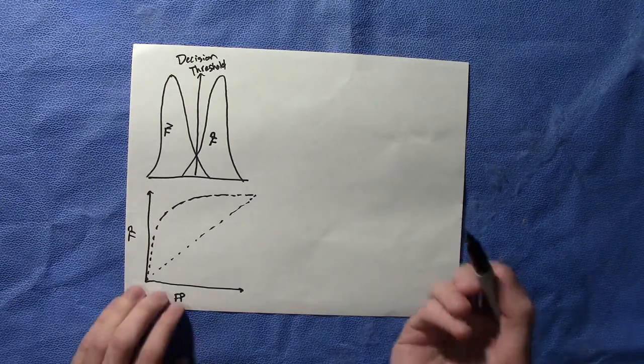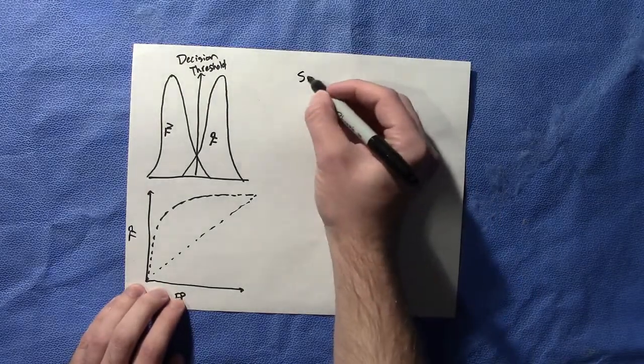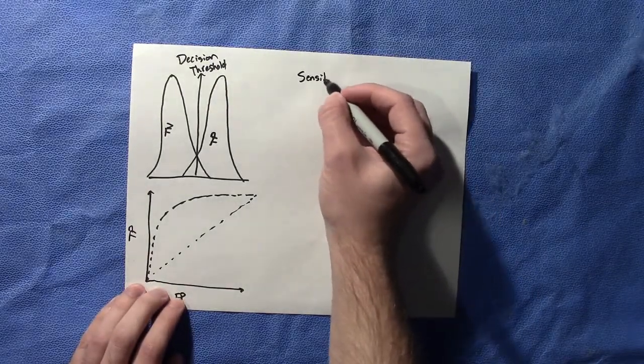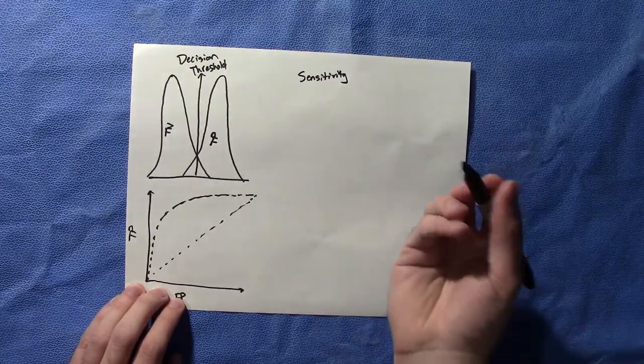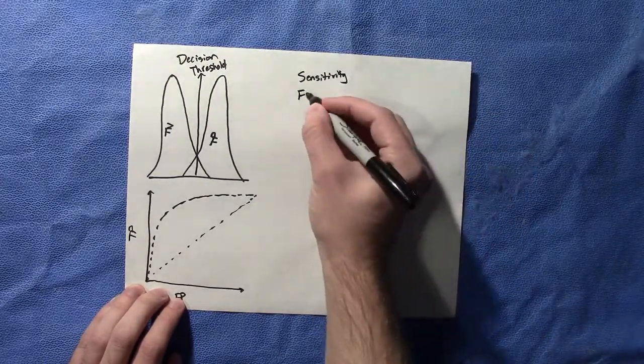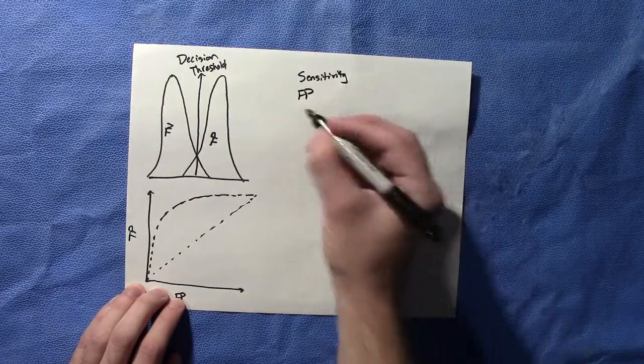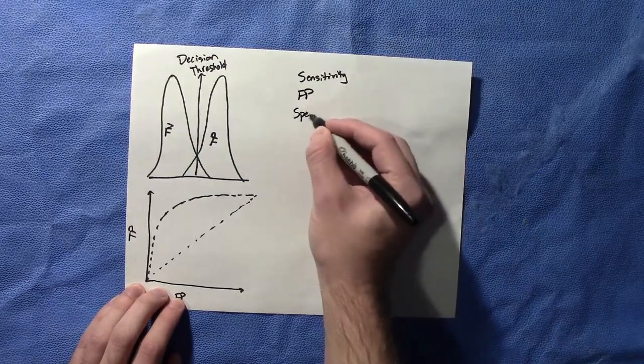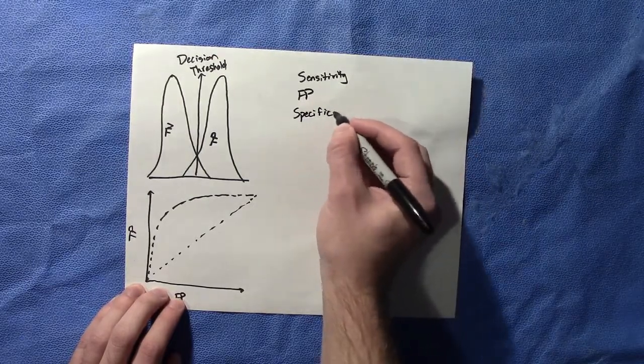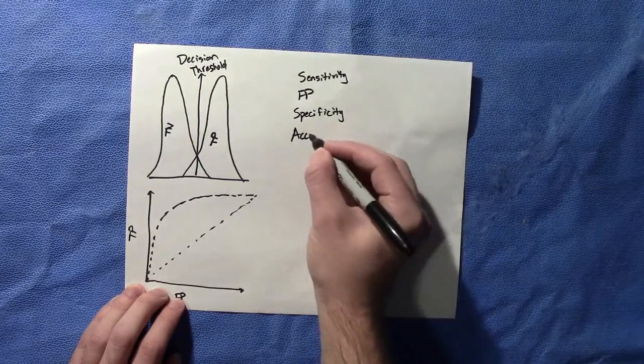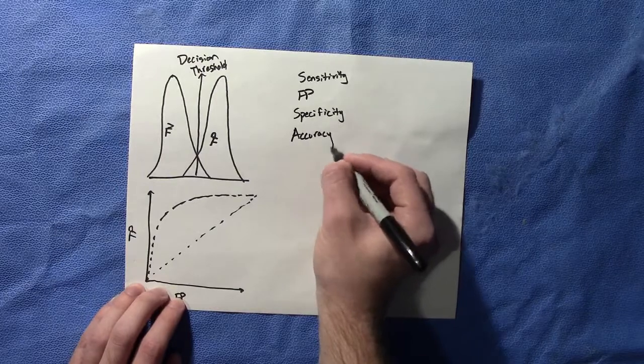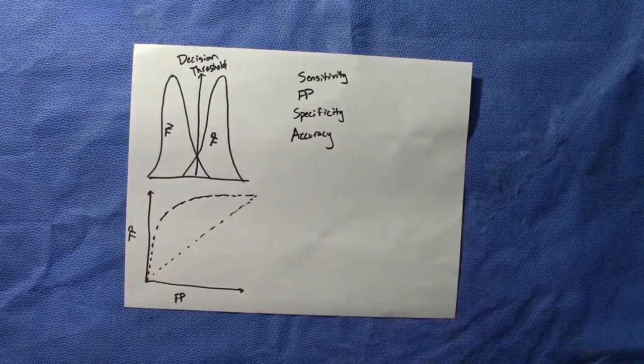And the first would be sensitivity. So if they ask you to find the sensitivity or maybe how would you find a false positive or specificity, that's another one they often look at in these types of tests. We also have just simply our accuracy.